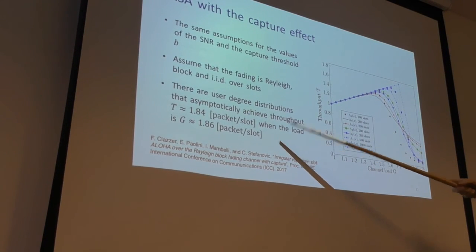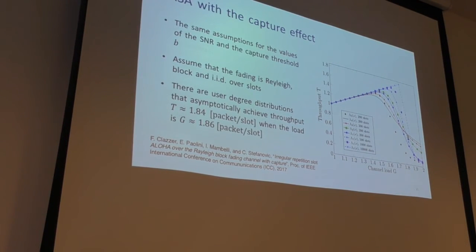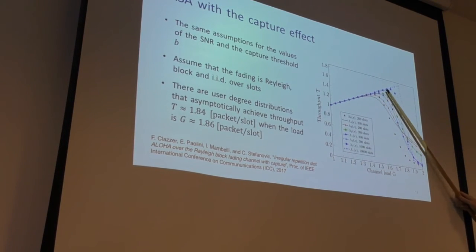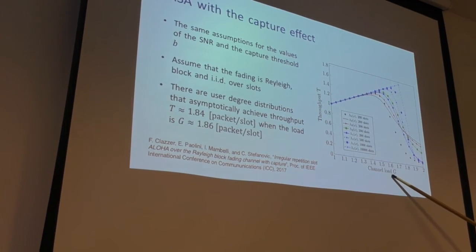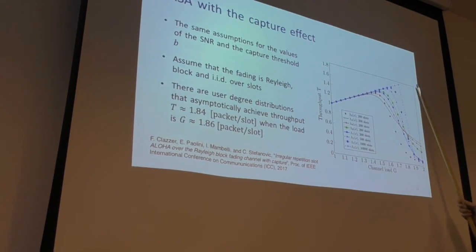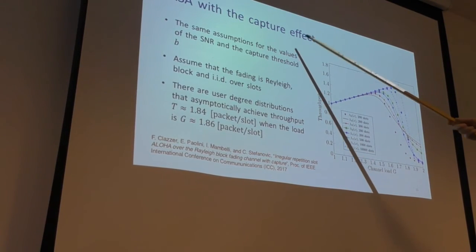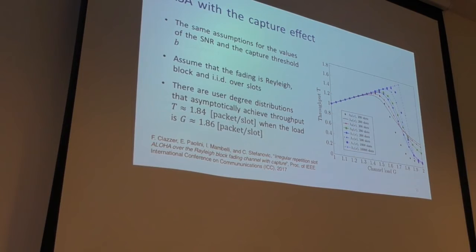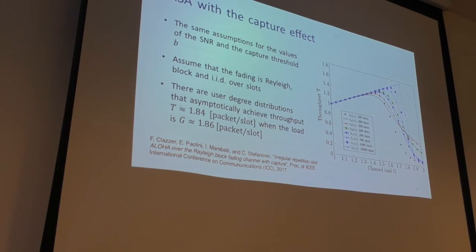This asymptotic result is complemented by finite-length simulations using the degree distribution that governs replica counts. The characteristic threshold behavior of codes on graphs is observed: as the number of users increases, throughput as a function of load increases and asymptotically approaches 1.84, then suddenly drops. The bottom line is that capture effect combined with interference cancellation can extract almost two packets per slot on average.